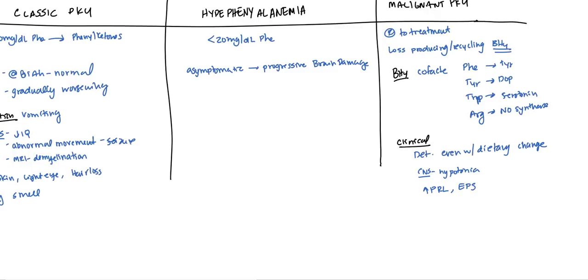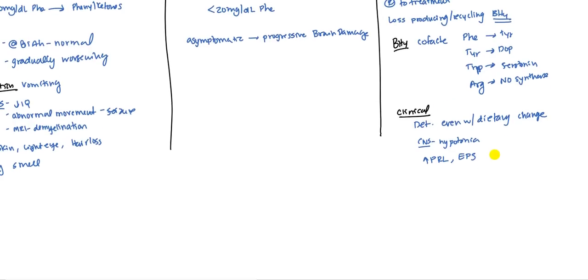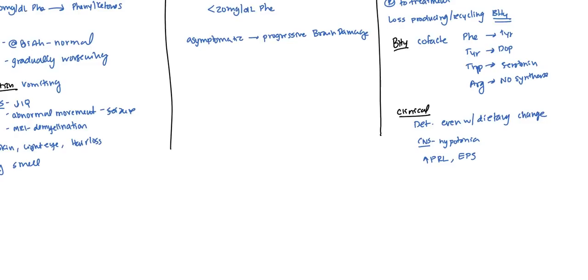And of course, extrapyramidal symptoms, Parkinsonian-like symptoms. So what generally is done is if a patient does have high phenylalanine levels, they will immediately check the BH4 levels. However, there is other types of diagnostic tests besides just checking the levels.